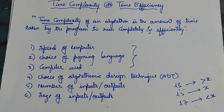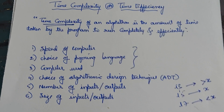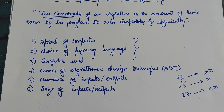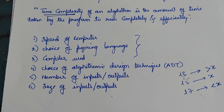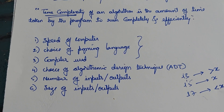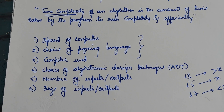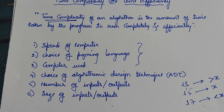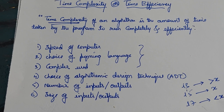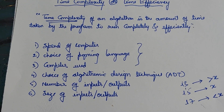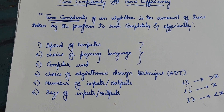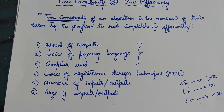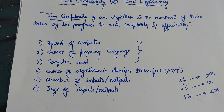The time complexity also depends on what type of algorithm design technique we use. The fifth factor is the number of inputs or outputs — if you write a program to add two numbers it takes some time, but if you add n elements it obviously takes more time. Similarly, the sixth factor is the size of the inputs or outputs. For example, adding two smaller numbers produces a small output quickly, but adding two large matrices of size m×n will take much more time.